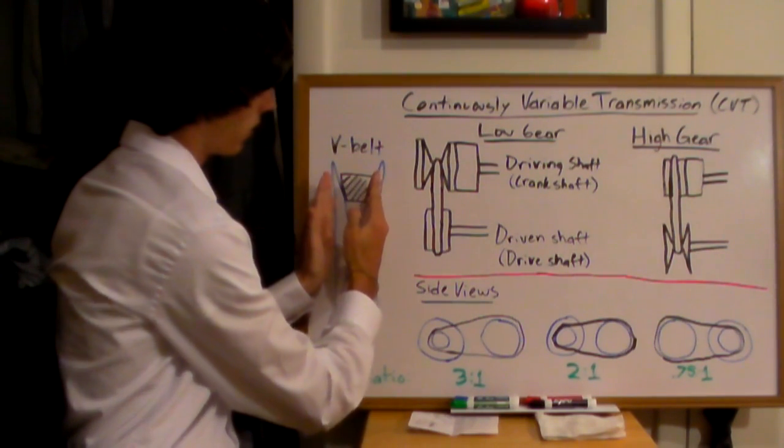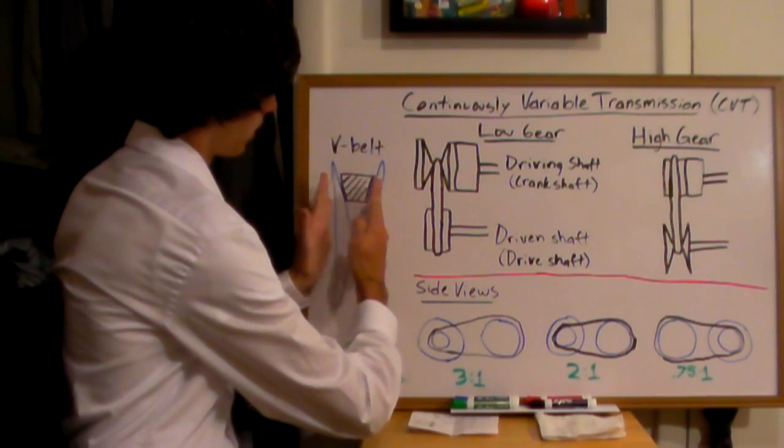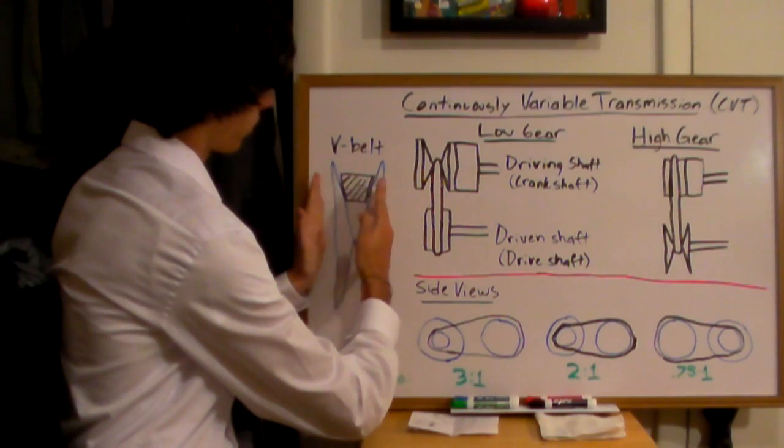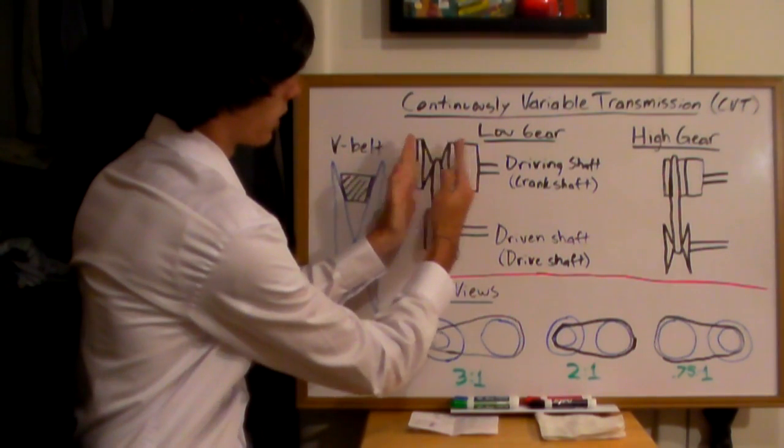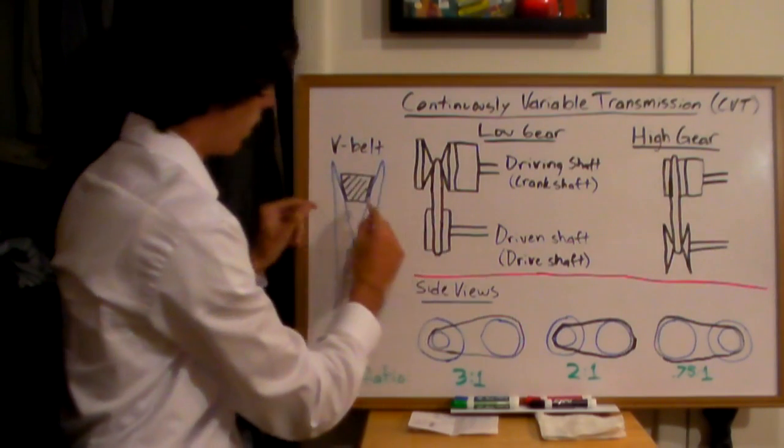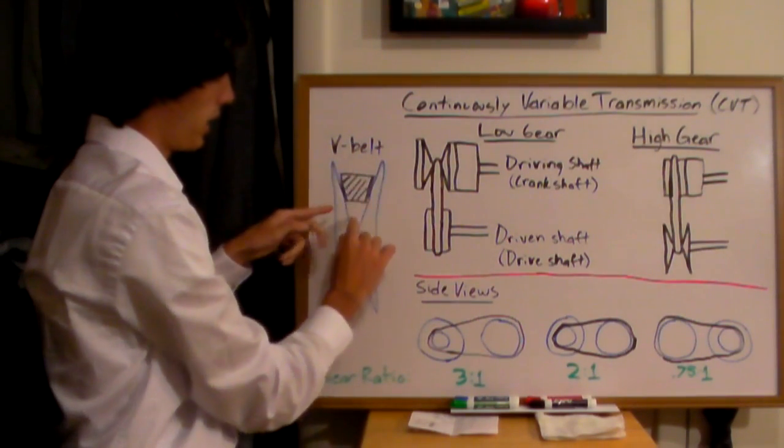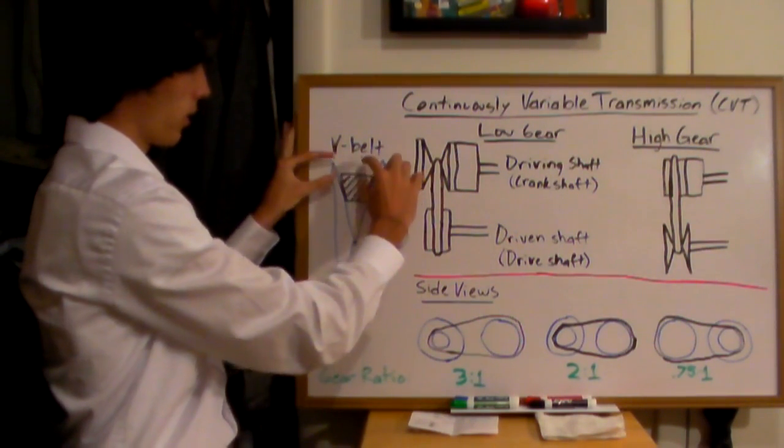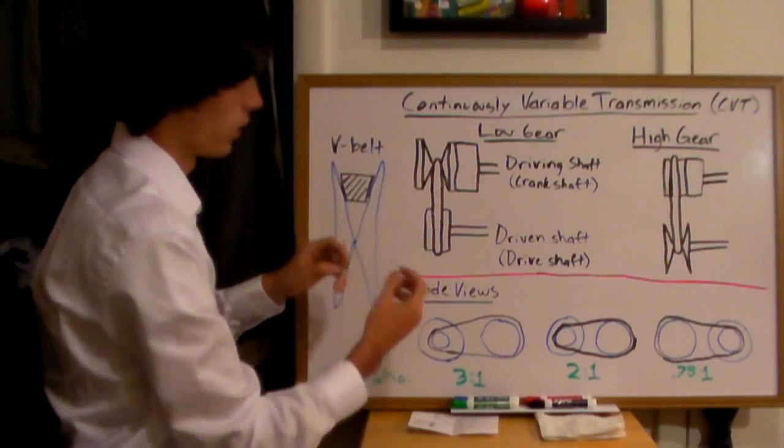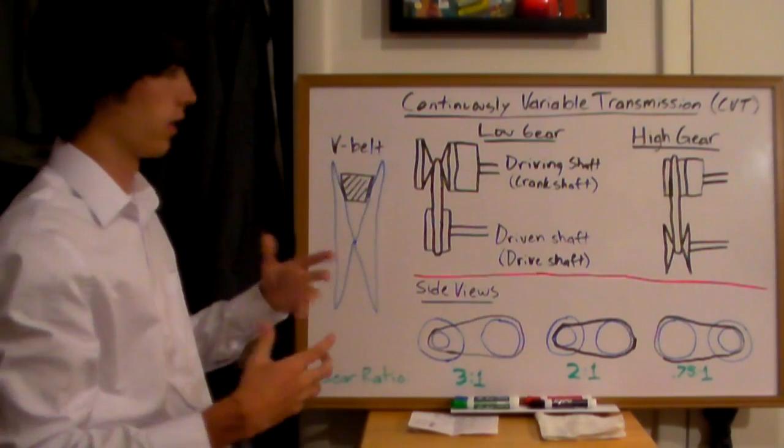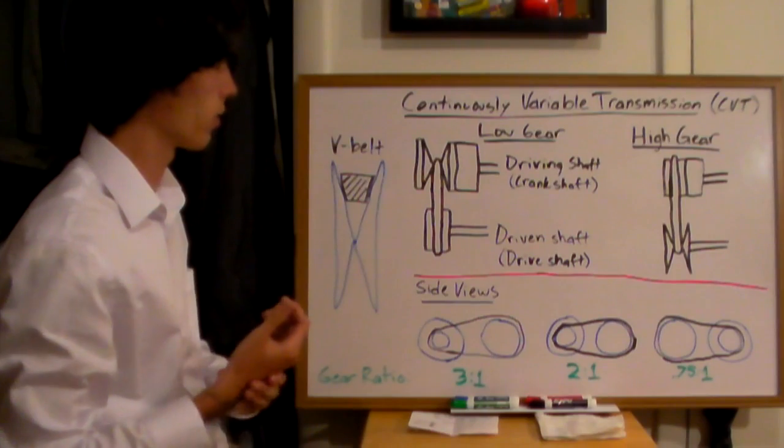As this pulley system closes in or expands out, which can be controlled electronically by the transmission, it will force this V-belt up and down. That V-belt going up and down will, in turn, create the infinite number of gear ratios.